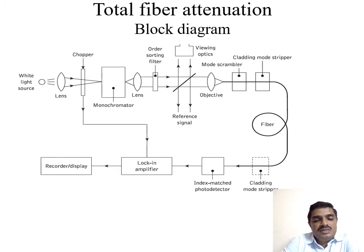Then the index-matched signal is given to the lock-in amplifier. In that lock-in amplifier block, the input pattern is already recorded. Now the output signal and input pattern are compared. If there are any mismatches or noises available, those are corrected in the lock-in amplifier. It is then recorded and given to the user.